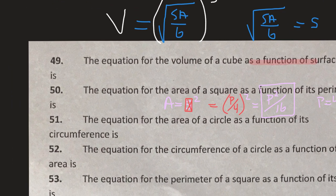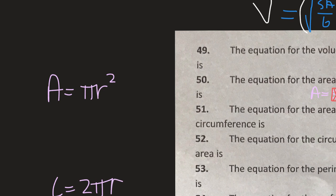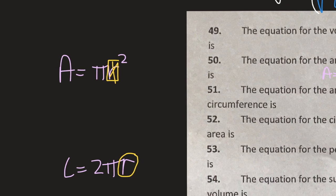The area of a circle as a function of its circumference. The area of a circle is pi r squared. Circumference of a circle is 2 pi r. So we want to get rid of r in the area. I have to solve for r in the circumference equation. The radius is the circumference divided by 2 pi. So that comes up here — circumference divided by 2 pi.